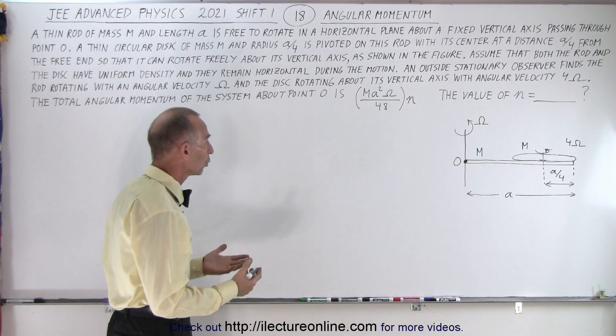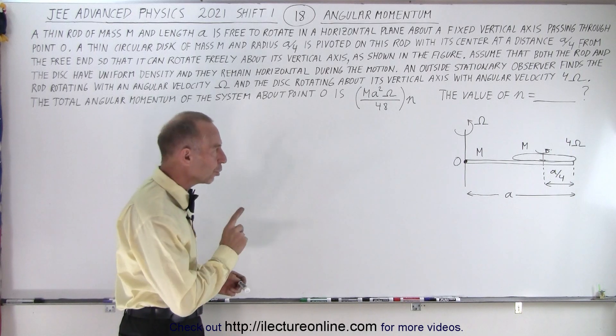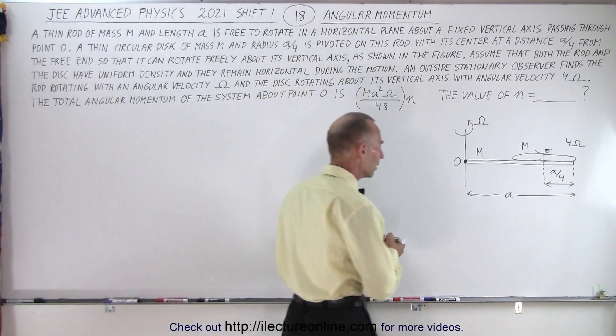So we need to find the total angular momentum. To do that, we need to know the moment of inertia of both the rod and the disk.